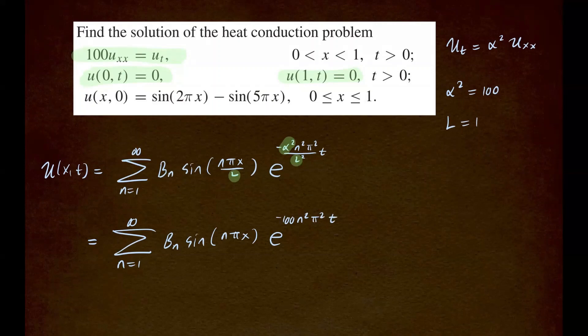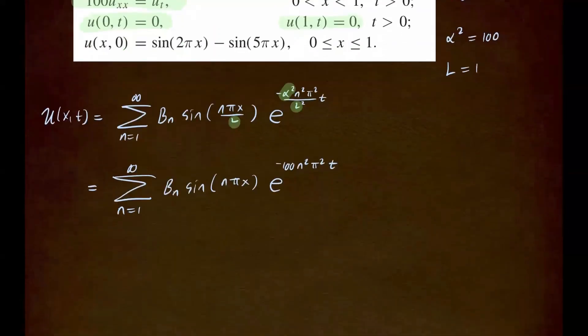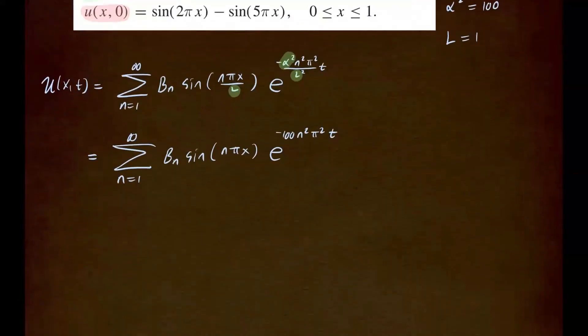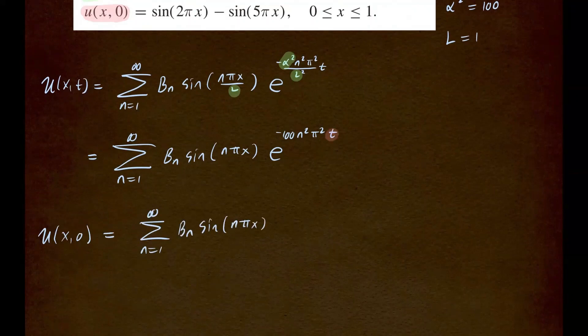Now we can impose the initial condition. So in this problem, our initial condition is right here. So we have u of x comma 0. When t is 0, you have the sum starting from n equals 1 to infinity, bn sine of n pi x. When you plug in 0 for t, the exponential term will disappear because e to the 0th power, that would be 1.